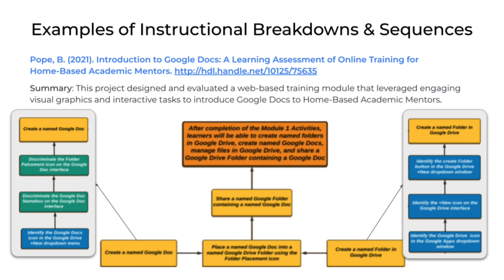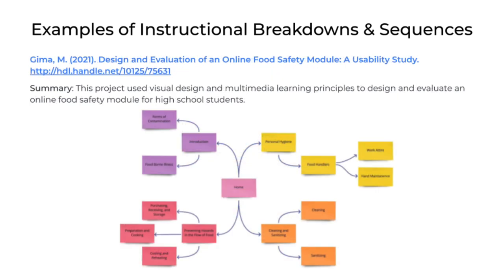This is an excellent example, and the arrow suggests the order in which the content would be covered. Here's a slightly different example from a project related to online food safety. This is more of a content analysis where the student broke the content into four primary categories: an introduction in purple, a personal hygiene section in yellow, a cleaning and sanitizing section in orange, and a preventing hazards in the flow of food section in red. Those high-level topics further broke down into subtopics—kind of a mind map approach.